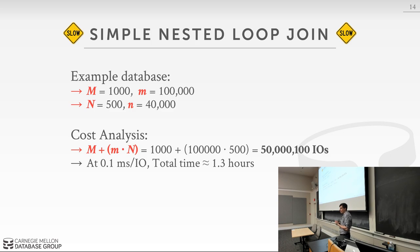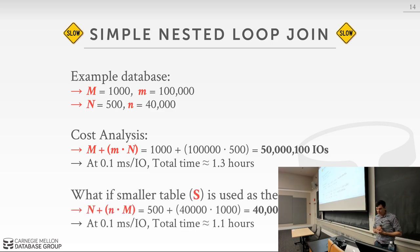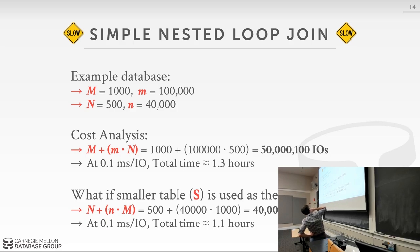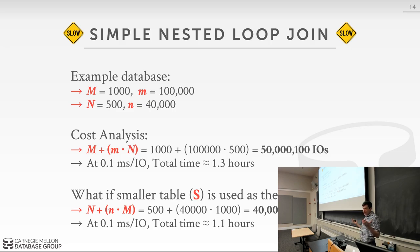With numbers: say we have 1,000 pages in the outer table with 100,000 tuples and 500 pages in the inner table with 40,000 tuples. Running the formula gives 50 billion I/Os, and assuming a fast SSD at 0.1 milliseconds per I/O, computing this join takes 1.3 hours. One simple improvement: always put the smaller table as the outer table. Using S as the outer table gets the I/Os down to 40 million, but total time is still about 1.1 hours.